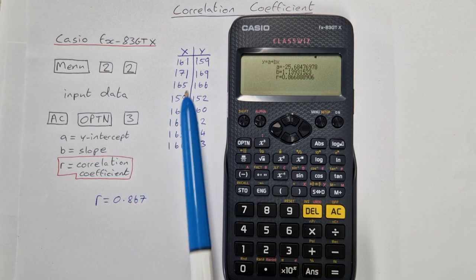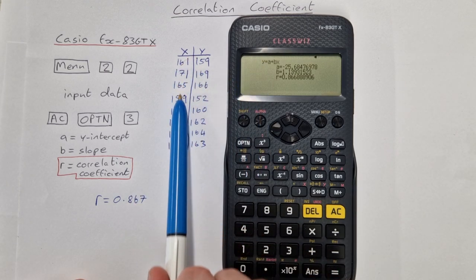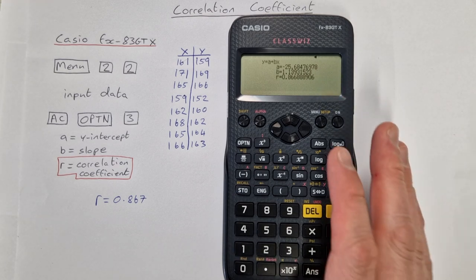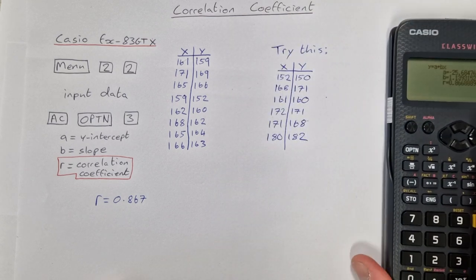So what you should do now is try this on your own calculator using those same data there. See if you get the same correlation coefficient as I did, and if you do, then you can try this one here.